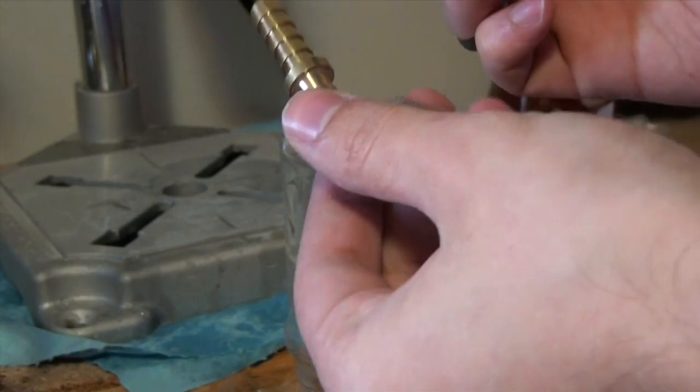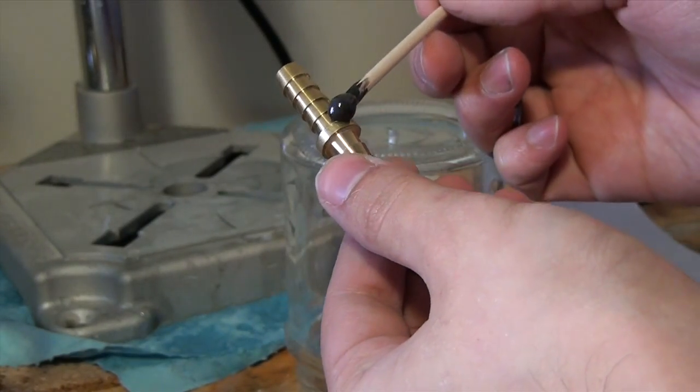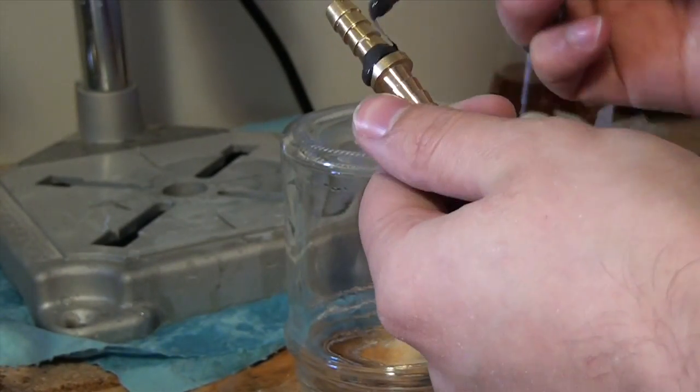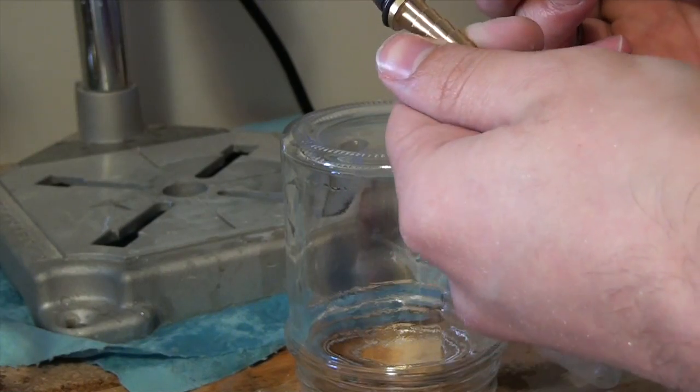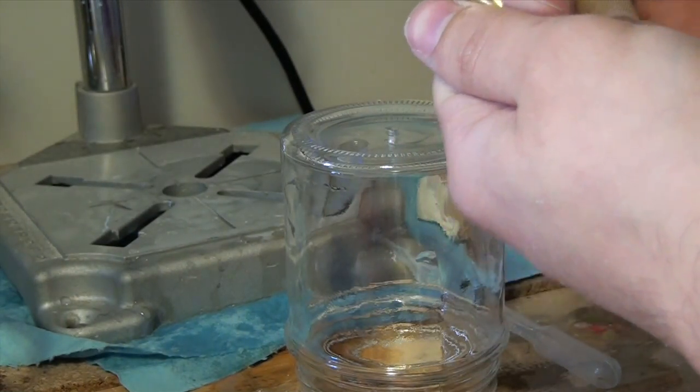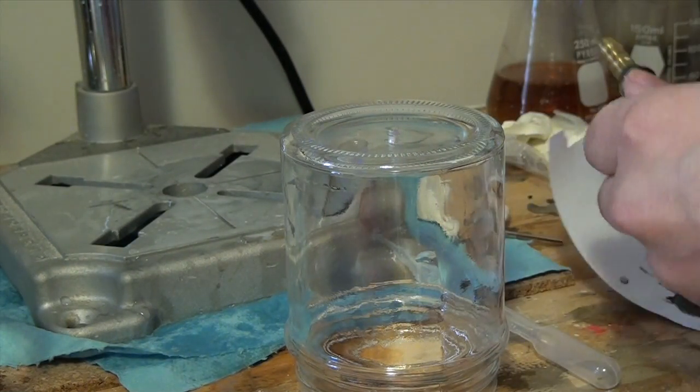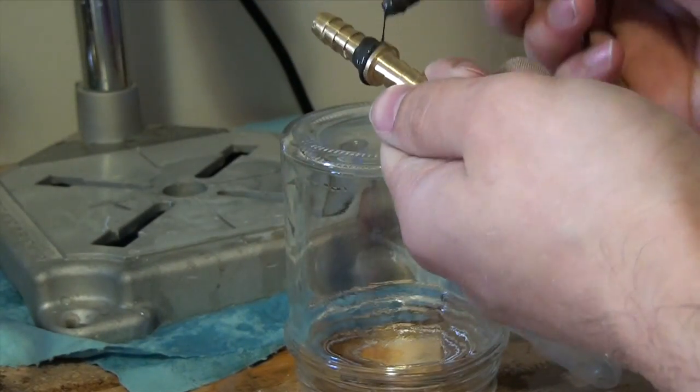Now all that's left to do is to epoxy everything up. I'm just using a quick set JB Weld. Honestly, JB Weld is like the duct tape of the vacuum world. This stuff works amazingly to seal pretty much any leak you have and it can take a fair amount of abuse.